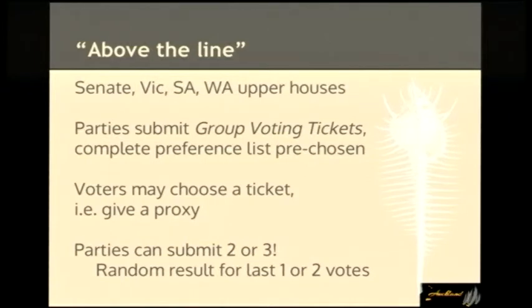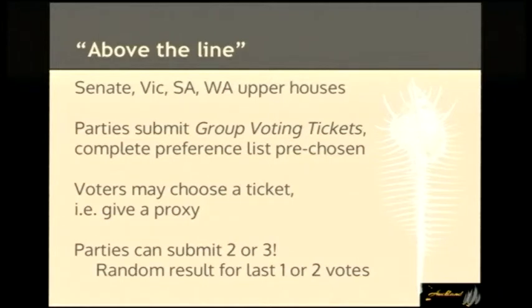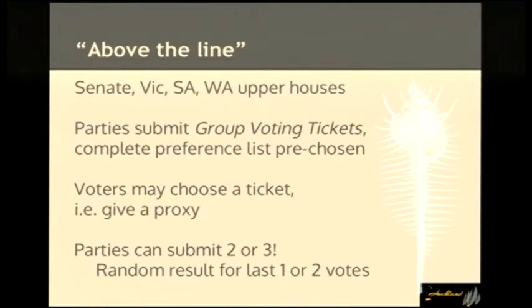In many of the upper houses, we have an above-the-line voting system. Parties submit what are called group voting tickets. The effect of this — and not everyone is aware of this — is that the complete preference list has been pre-chosen for you. Some people have the impression that they're voting for a party, but you're not. If you're voting above the line, they've filled out all the boxes for you across the entire ballot paper. It's like sending somebody along to the golf club annual meeting and giving them your proxy. You've handed over your vote to a political party.